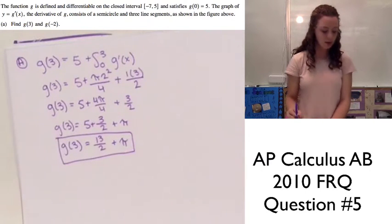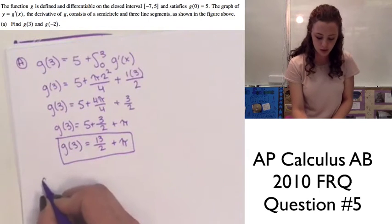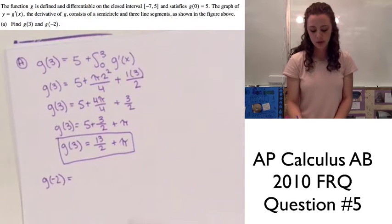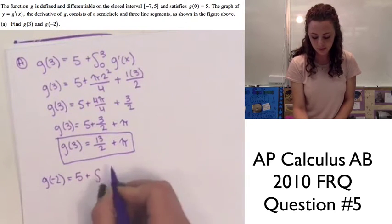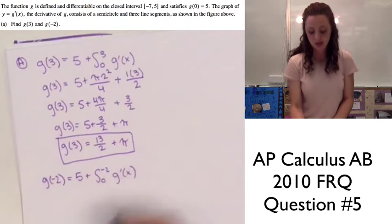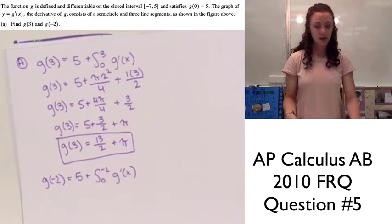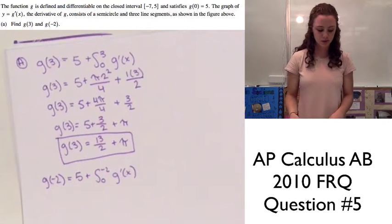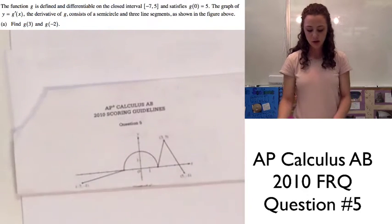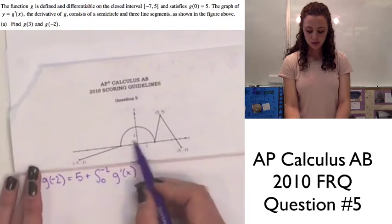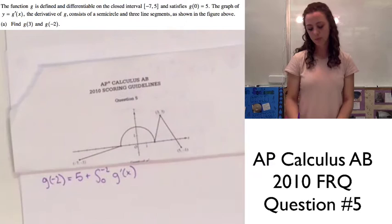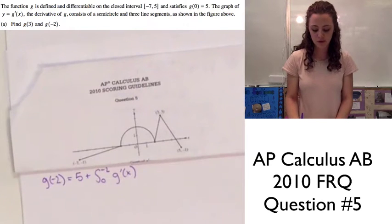Now we find g of negative 2. We use 5 plus the integral from 0 to negative 2 of g prime of x. We add 5 because g of 0 is equal to 5, as stated in the problem. Looking at the graph, from 0 to negative 2 is just a quarter of the circle.